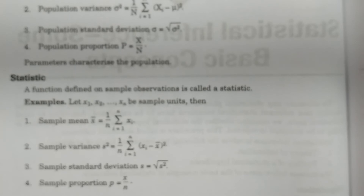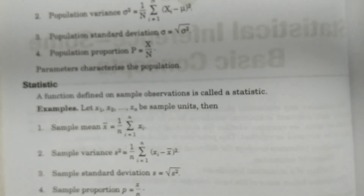So this is the definition of statistic and population parameter. The first definition is parameter and the second definition is statistic — these two definitions I have covered in this lesson. Population constants are called parameters, and a function defined on the sample observations is nothing but statistic.